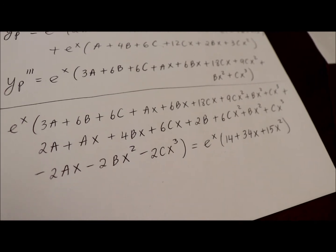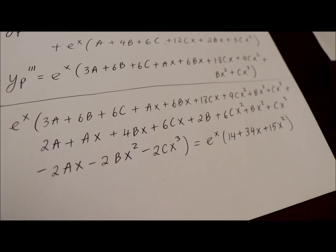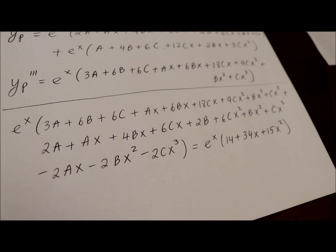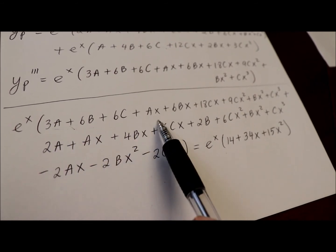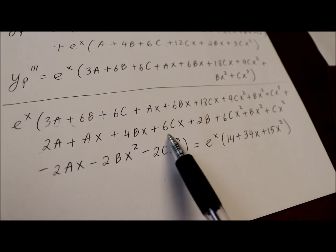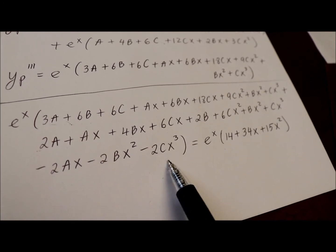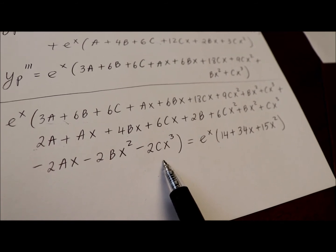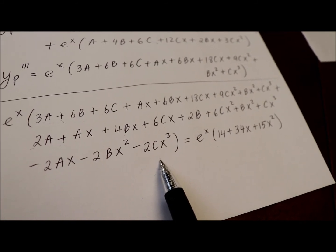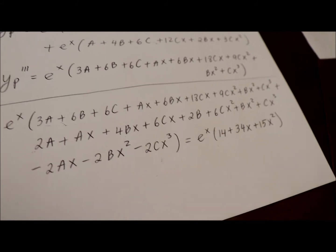Alright, so this is what I got after substituting all the derivatives and particular solution in the equation. This first line right here is my third derivative, then second derivative, and this is particular solution multiplied by negative 2. Now,